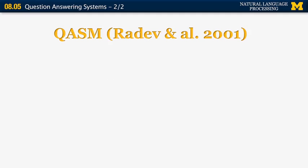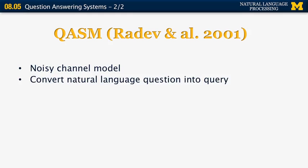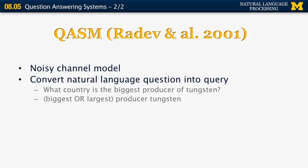One more system, from the University of Michigan, is called COSM from 2001. It's also based on a noisy channel model. The idea is that you want to convert the natural language question into a query — this is different from the system by Marcu and Echihabi, where the mapping was between a question and a sentence. For example, if the question is 'what country is the biggest producer of tungsten,' you want to convert it to something using synonyms like 'biggest' or 'largest,' keeping content words such as 'producer' and 'tungsten' and dropping stop words.